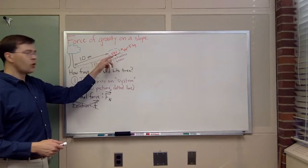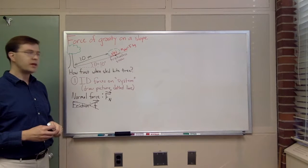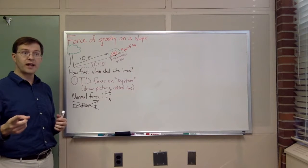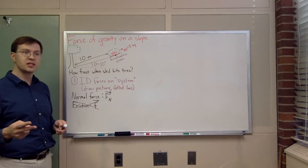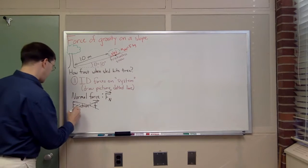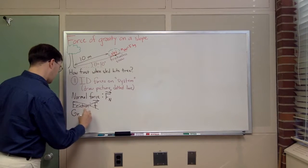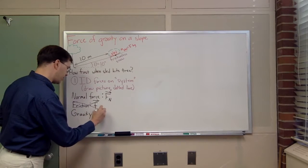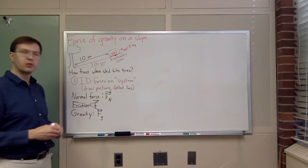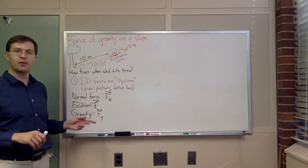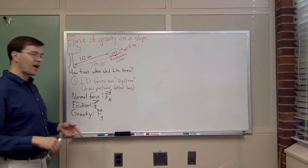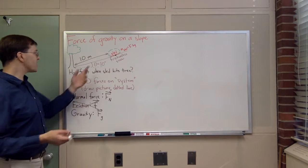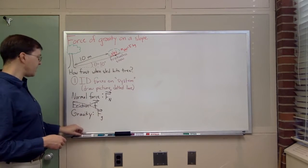That's the only contact point if we're ignoring air resistance. The other thing we can do is look at long-range forces. Gravity is the most important long-range force for us — the textbook calls it Fg, some call it weight, w. We've got our normal force and gravity — that's our complete list of forces. We've gone to every contact point, listed the contact forces, and looked at the long-range forces. That was step one: identify the forces.